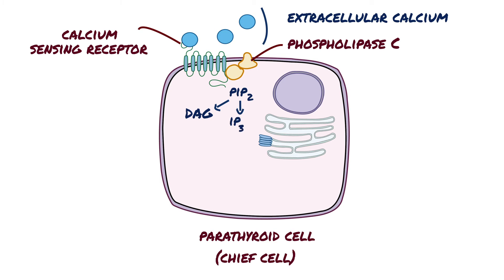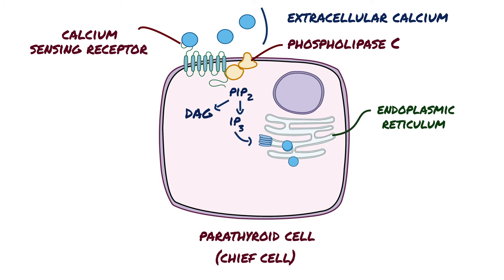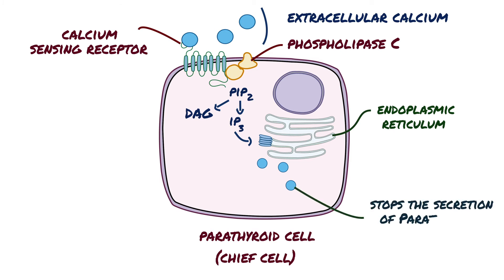IP3 diffuses through the cytoplasm to reach the endoplasmic reticulum, where it binds to a receptor called the inositol triphosphate receptor on a ligand-gated calcium channel. This opens the channel, and the calcium stored in the endoplasmic reticulum is released into the cytoplasm, making intracellular calcium levels increase. High intracellular calcium concentration stops the secretion of parathyroid hormone.